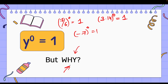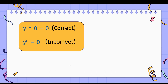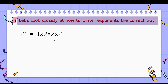I have two proofs for you today. We know that any number multiplied with 0 is 0, but any number raised to the power 0 — why is it not 0? I know that seems like it should be incorrect, but that's what we are going to decode.